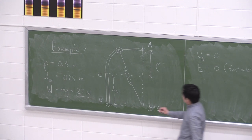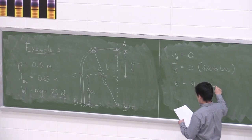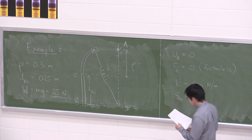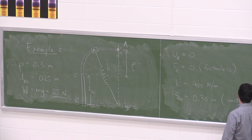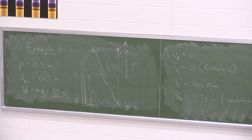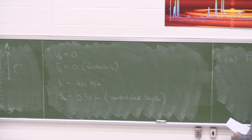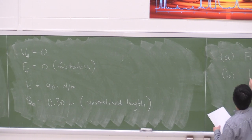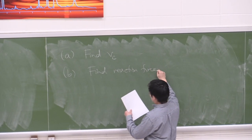The spring has a spring constant K equal to 400 newton per meter, and the initial unstretched length of the spring is 0.30 meters. The two questions are: A — find the velocity or speed at C, and B — find the reaction force at C.